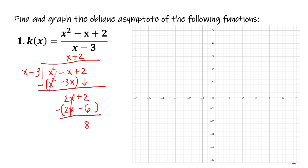In getting the oblique asymptote, we don't worry about the remainder. We only get this part. So we are going to equate this to y. Our oblique asymptote is y equals x plus 2. We got a linear equation.